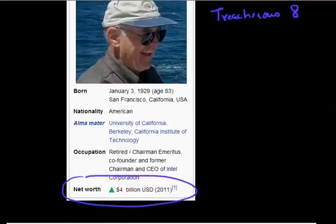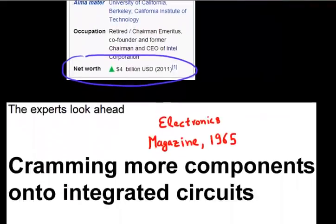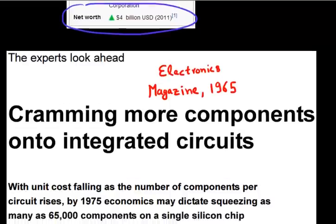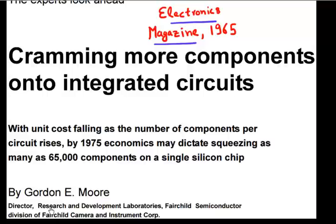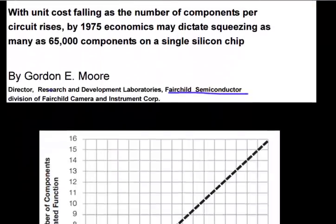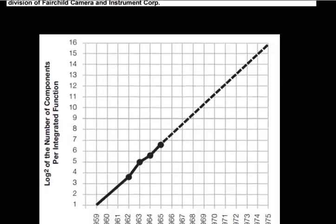But the thing I want to bring out is this article that Mr. Moore wrote in 1965 in Electronics Magazine while he was still working at Fairchild Semiconductor. And this was a magazine article. It didn't have too many technical details. But it had this one figure which became famous and is often referred as Moore's Law.